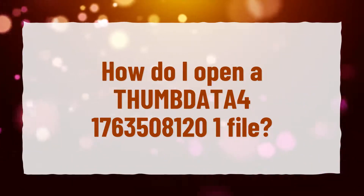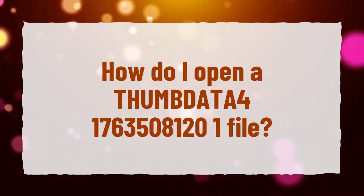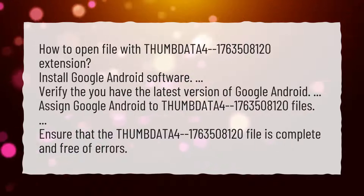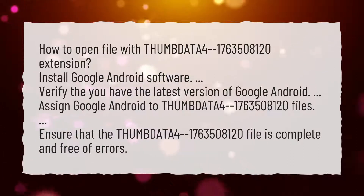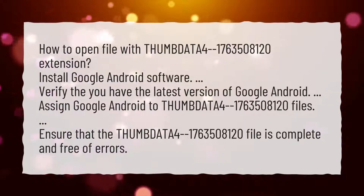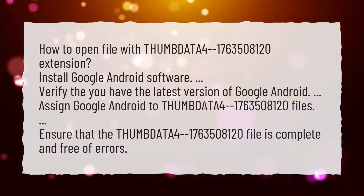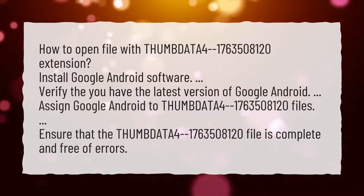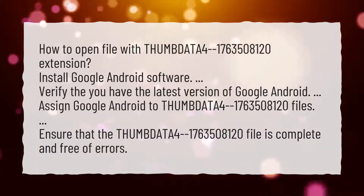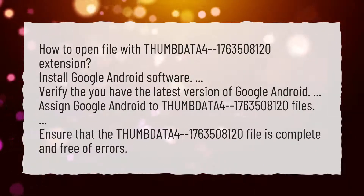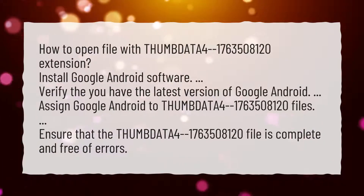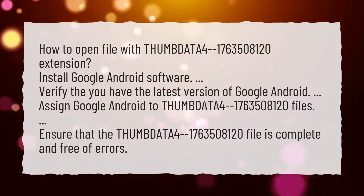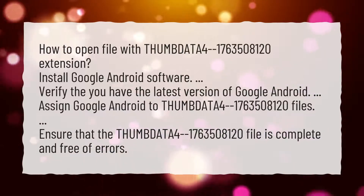How do I open a THUMBDATA4-1763508120 file? To open a file with the THUMBDATA4-1763508120 extension: install Google Android software, verify that you have the latest version of Google Android, assign Google Android to THUMBDATA4-1763508120 files, and ensure the THUMBDATA4-1763508120 file is complete and free of errors.